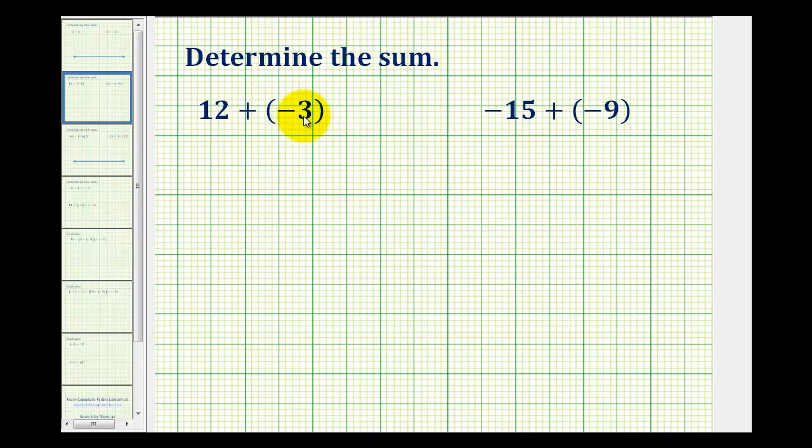For positive 12 plus negative 3, because this 12 is positive and this 3 is negative, we can think of the sum as winning $12, and then we add a loss of $3. If we win $12 and then lose $3, we're still ahead $9, so the sum would be positive 9. Notice how the positive number outweighs the negative, resulting in a positive sum.